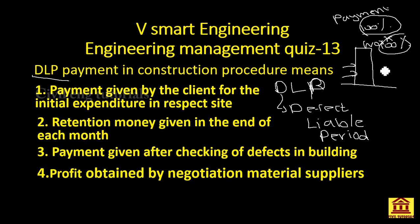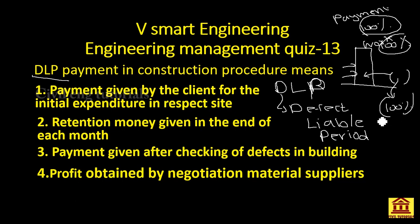DLP — the Defect Liable Period — means the client will check your work for a certain period. If he finds some defects, he will deduct some money and give you the balance. If he finds no defects, he will give you 100% of the money as promised. So DLP payment is the payment given by the client to the contractor after the contractor has finished all his work and defects have been checked for a certain period.